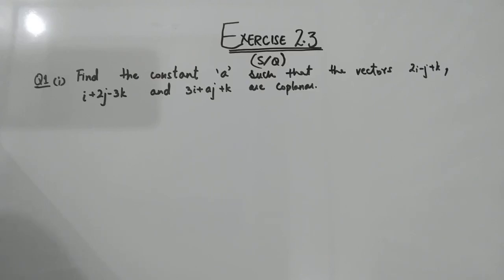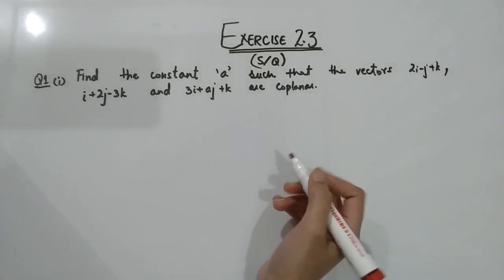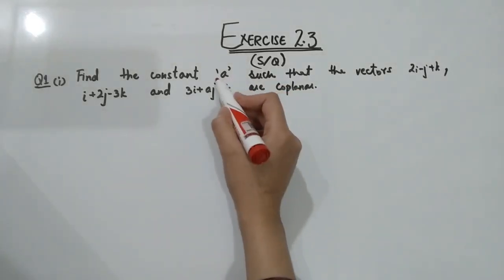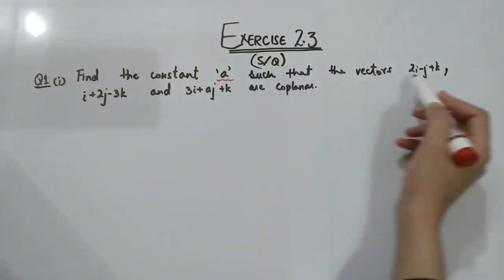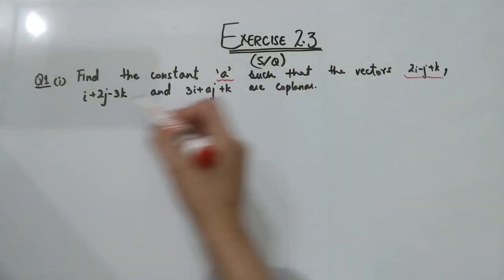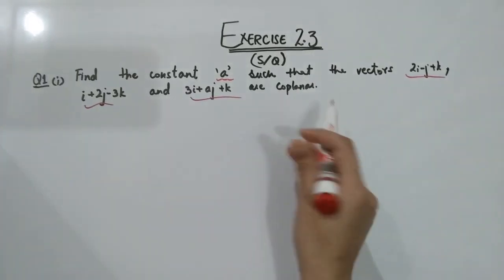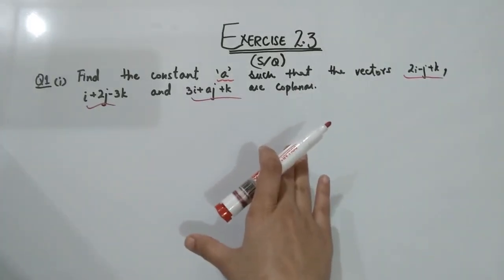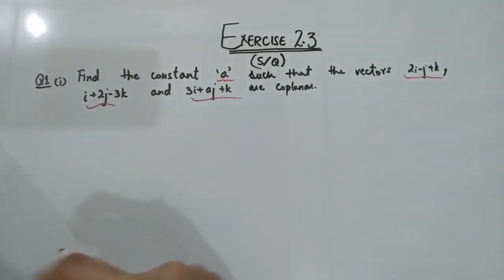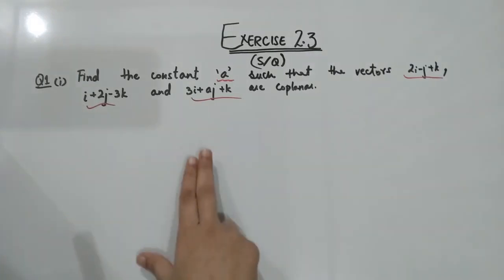Welcome dear learners. I welcome you all to the solution of Exercise 2.3. In question number one, you have to find a constant A such that three given vectors are coplanar. Since the vectors are coplanar, the determinant or scalar triple product will be zero.